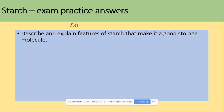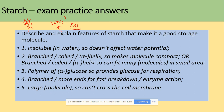Here we look at the pattern with 'so what'. Describe means say what you can see; explain means use your biological knowledge to say why. So: it's insoluble, so doesn't affect water potential. It's a branched coil, so it's compact and can fit in small areas. It's a polymer of alpha glucose, so it can be used for respiration as a substrate. It's branched, so it has many ends that allow fast breakdown by enzyme action. It's large, so it cannot cross the cell membrane and cannot leave the cells.